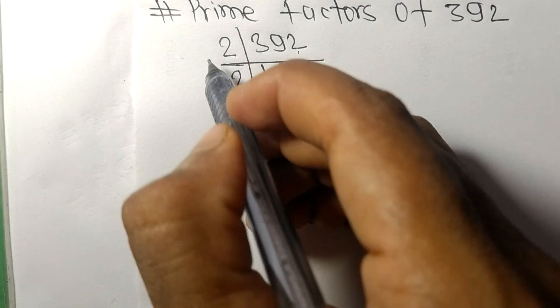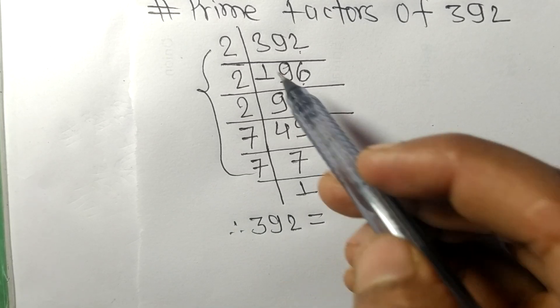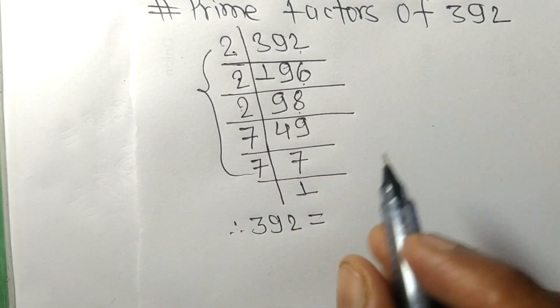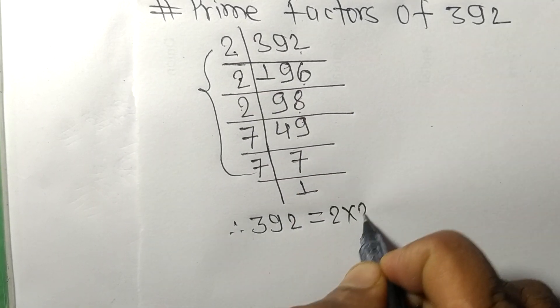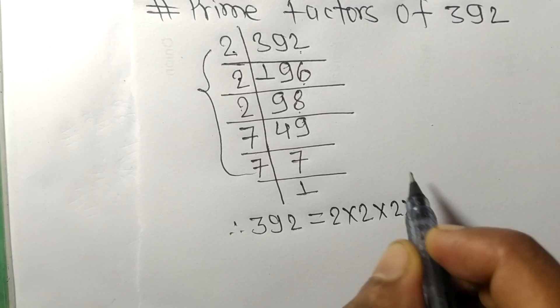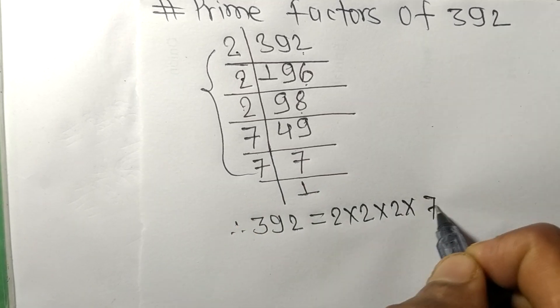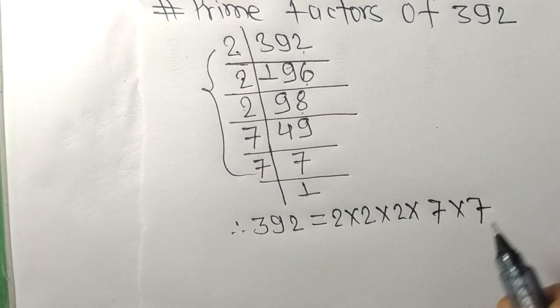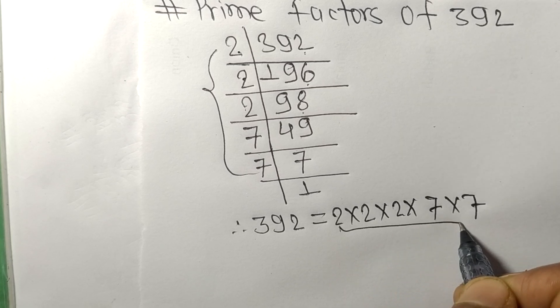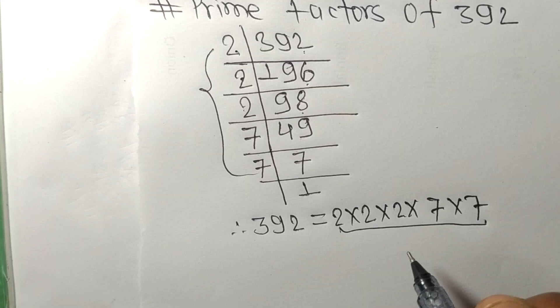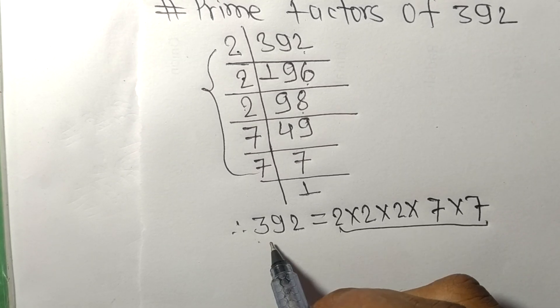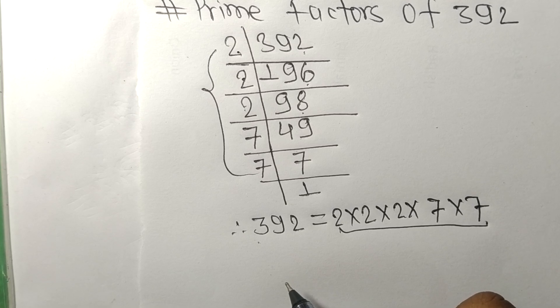...is equal to 2 times 2 times 2 times 7 times 7. So 2 and 7 are the prime factors of 392. This much for today, and thanks for watching.